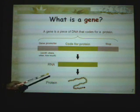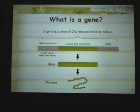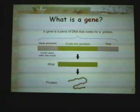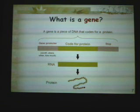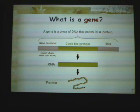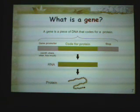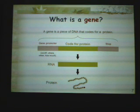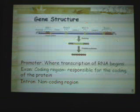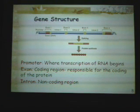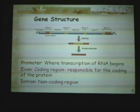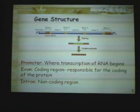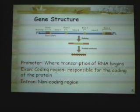The gene is transcribed into RNA, and the RNA is then translated into protein. The gene contains a promoter region, which signals where transcription begins.